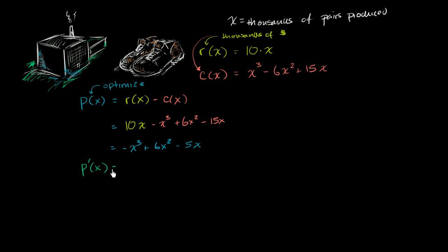So p prime of x is going to be equal to negative 3x squared plus 12x minus 5. And so this thing is going to be defined for all x. So the only critical points we're going to have is when the first derivative is equal to 0. So negative 3x squared plus 12x minus 5 needs to be equal to 0. And just so that I don't have as many negatives, let's multiply both sides by negative 1. So we get 3x squared minus 12x plus 5 is equal to 0.